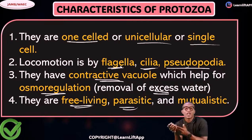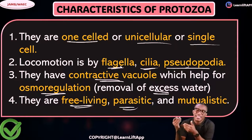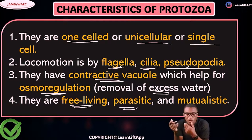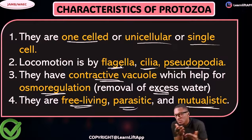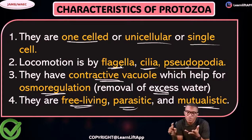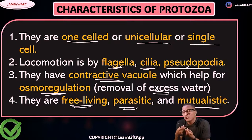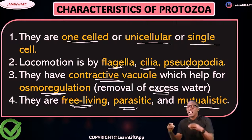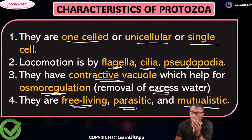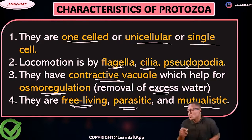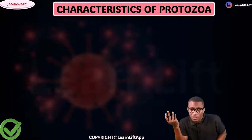Number four: some of them are free-living, meaning they move from one place to another. Some are parasitic — they depend on other organisms and can cause death to the host. Some are mutualistic, meaning both organisms benefit. For example, Plasmodium stays in human blood and causes malaria — it is a parasite.